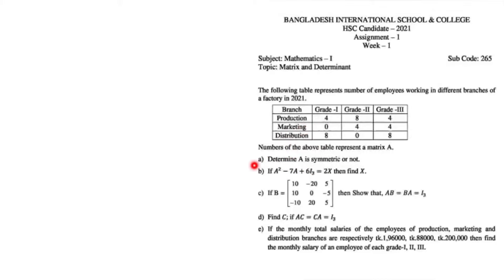Moving to question D: we have to find the unknown matrix C where AC = CA = I₃. This means AC = I. To find C, I keep C on one side and A on the other — so C equals A⁻¹ times I₃. We need to find the inverse of matrix A, then multiply by I₃ to determine the answer.